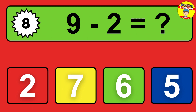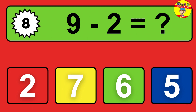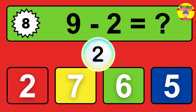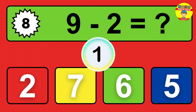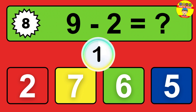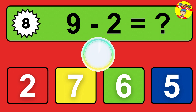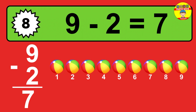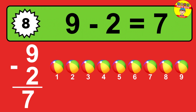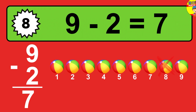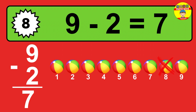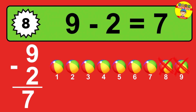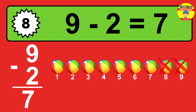Question 8. 9 minus 2 equals what? So the answer is 9 minus 2 is 7. Let's count it. 1, 2, 3, 4, 5, 6, 7.